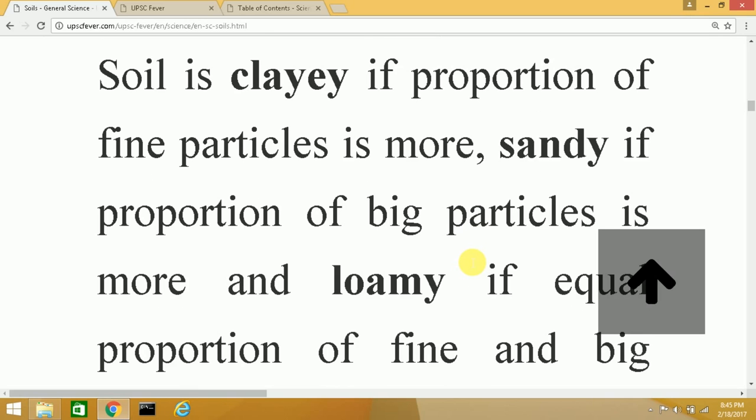Sandy soil is well-drained and does not allow waterlogging, whereas clayey soil retains water. The black cotton soil, which is clayey in nature, has high water retention. Sandy soil is mostly found near coastal regions, but the best for plant growth is the loamy type.